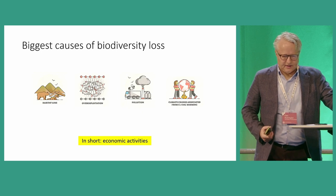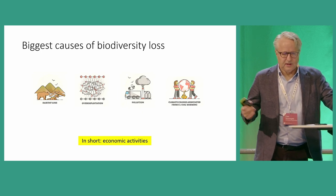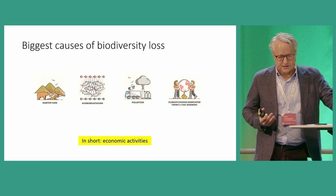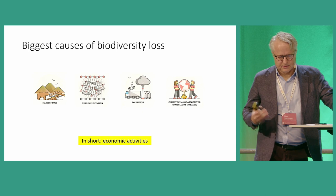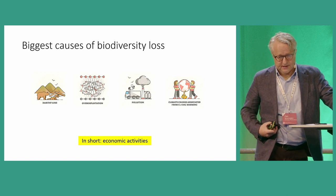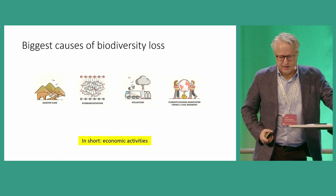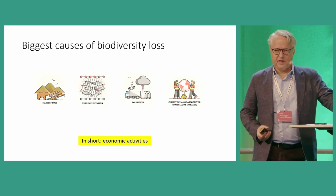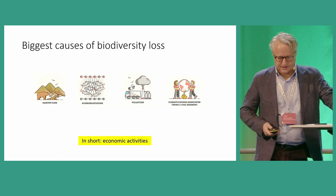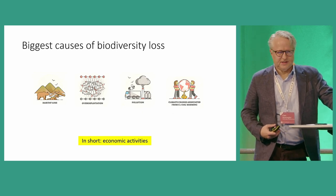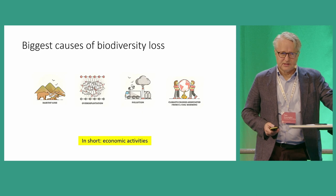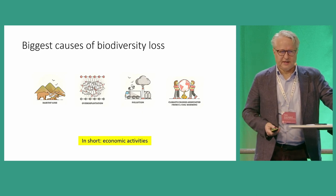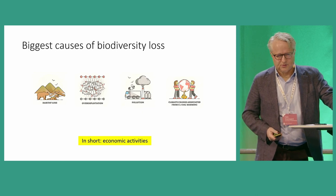If we look at the biggest causes of biodiversity loss, we have things like habitat loss — for example, we cut down a rainforest so that habitats get lost. Overexploitation — for example, we fish a lot in the oceans so that some populations go extinct. And we have pollution and climate change, both of which have a lot of different side effects. What is common to these factors? They are all the result of economic activities, which means that economic activities constitute a great threat to biodiversity.